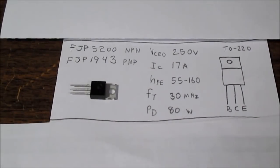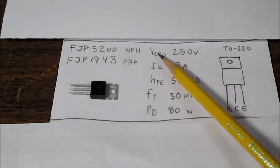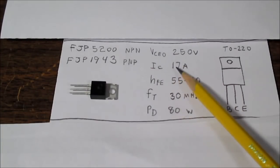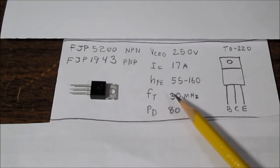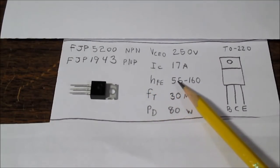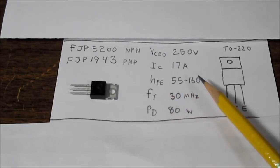Next up is the FJP5200 NPN or the FJP1943 PNP complement. These are purpose-built audio output transistors. They have a high collector emitter voltage of 250 volts. 17 amp collector current. And for a high power transistor, has pretty good gain. Like I said, the linearity of the gain is excellent.